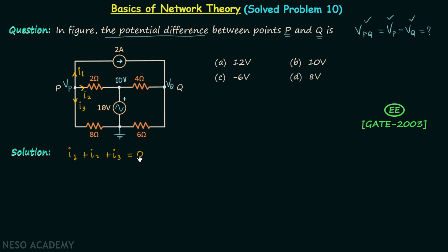According to KCL, I1 plus I2 plus I3 is equal to 0. When you focus on current I1 in the network you will find I1 is equal to 2 amperes. Current I2 is equal to VP minus 10 divided by 2, and current I3 is equal to VP minus 0 divided by 8, that is VP divided by 8 equal to 0. From here when you calculate VP you will find VP is equal to 4.8 volts.